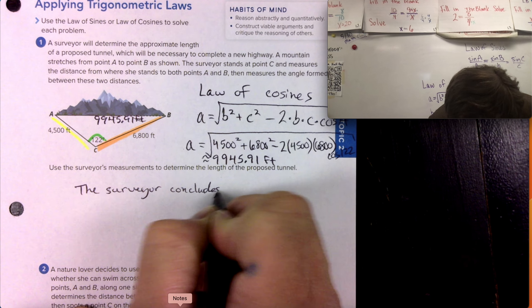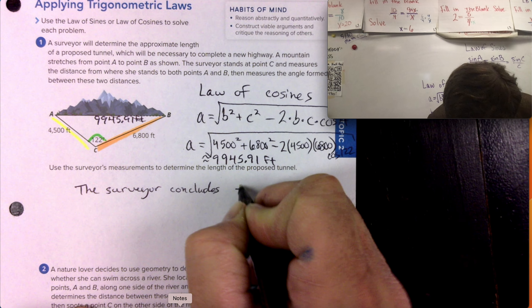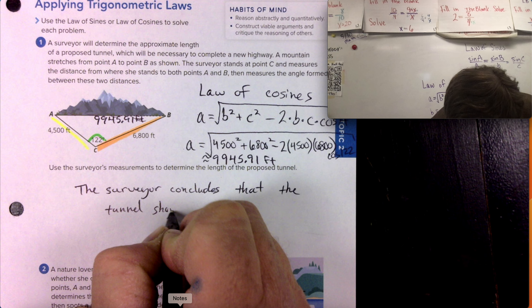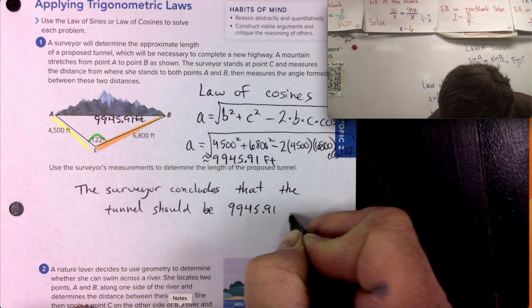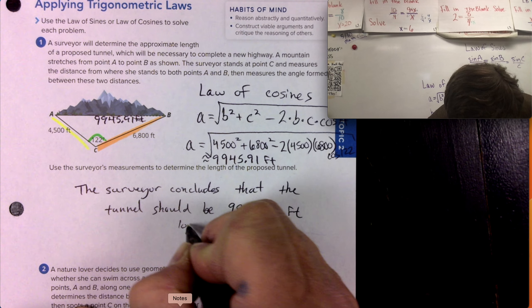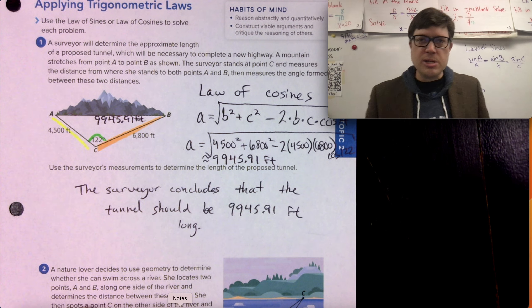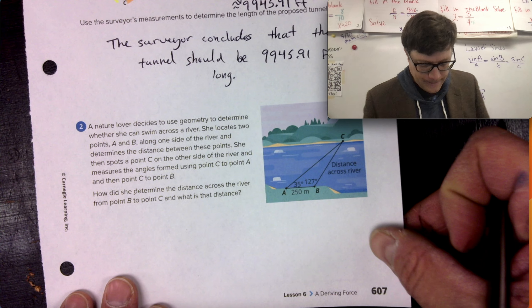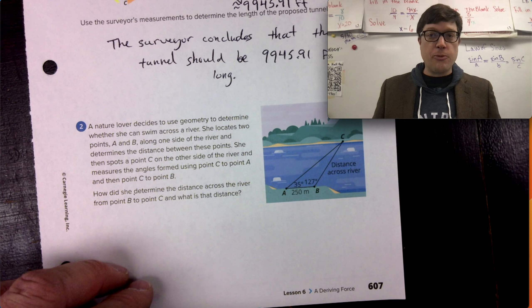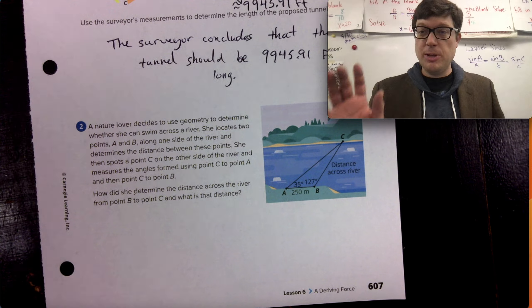The surveyor concludes that the tunnel should be 9,945.91 feet long. We should write in full sentences. That's what's happening here. Write in full sentences. Okay, question two. I'm going to break up question two for another video. That's been this one. Thanks for watching.